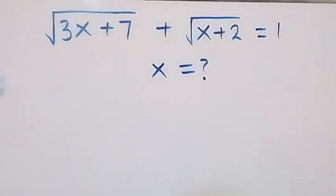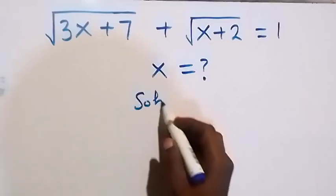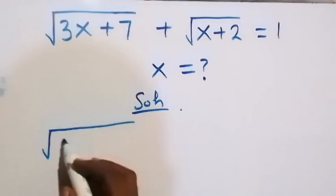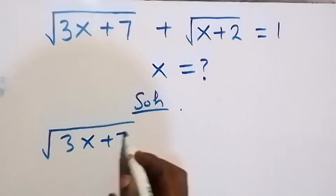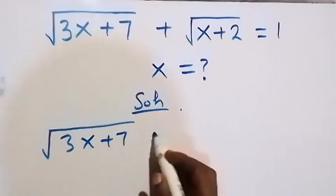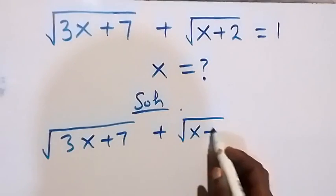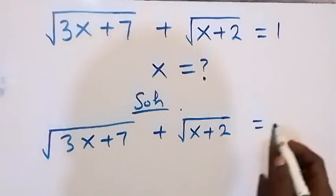Hello, you are welcome to solve this nice square root problem. From what is given, we should have: square root of 3x plus 7, plus square root of x plus 2, equals 1.